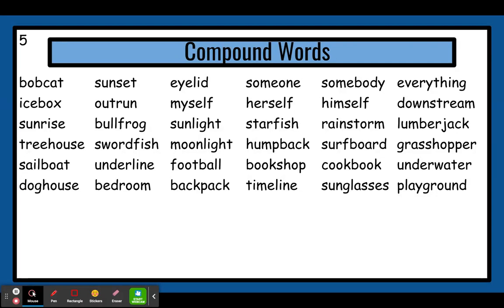First part: sail. Second part: boat. Put them together: sailboat. And that is a boat that uses sails in order to go through the water. Next word — first part: under, second part: line. Put them together: underline. And that is when you put a line under a word.